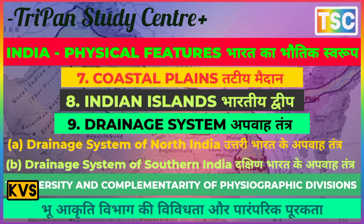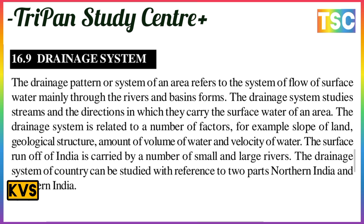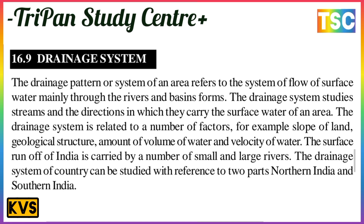The drainage system is a system of flow of surface water mainly through rivers and basins. It is a study of streams and the direction in which they carry surface water. The drainage system is related to a number of factors, for example the slope of land, geological structure, volume of water, and velocity of water — referred to as run-off.